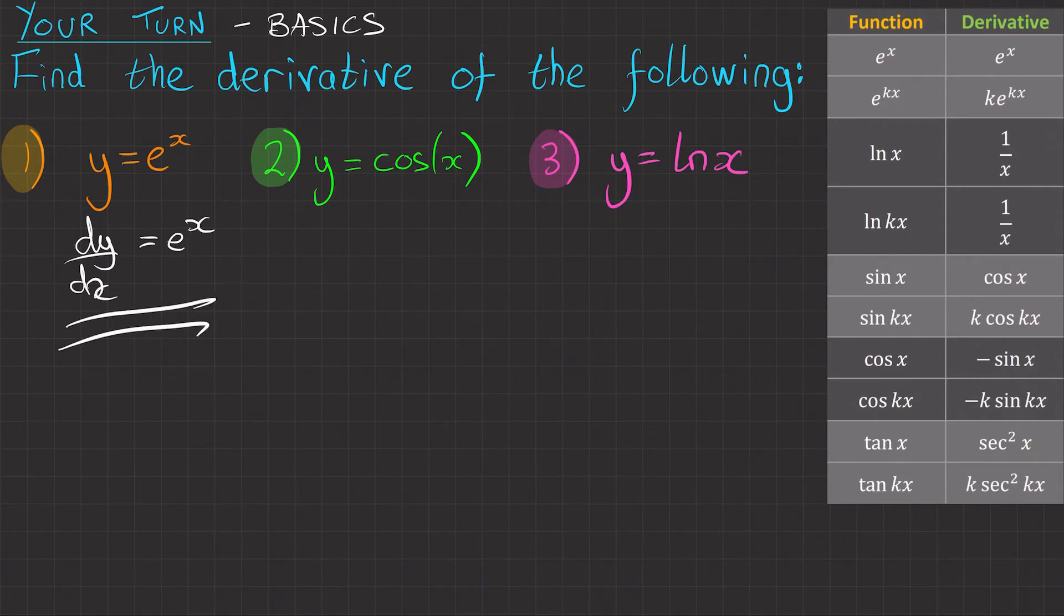The second one, y equals cos x. Well looking down the table, we've got cos x here and the derivative is minus sin x. So dy/dx is minus sin x.